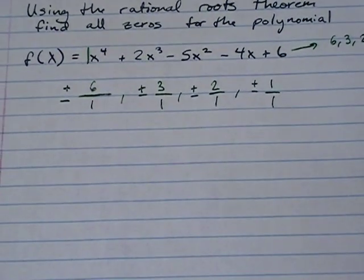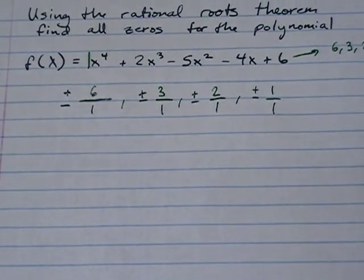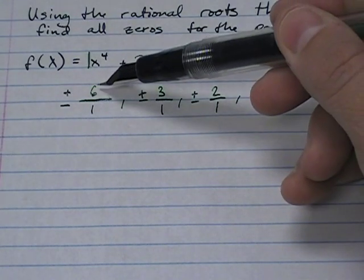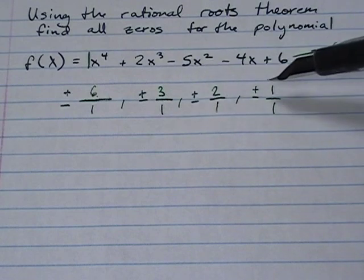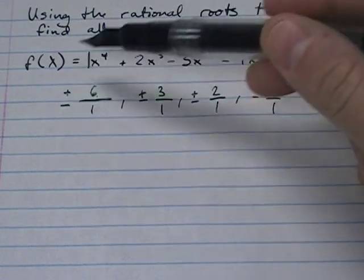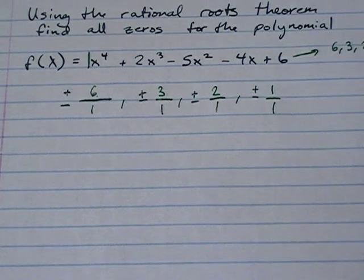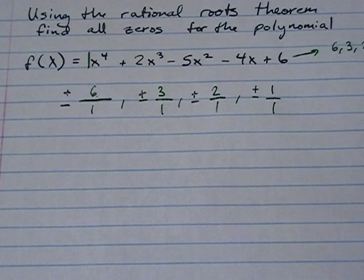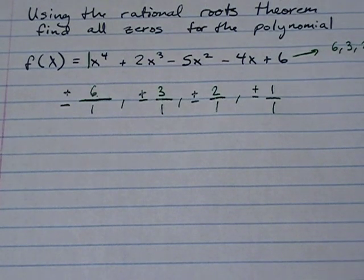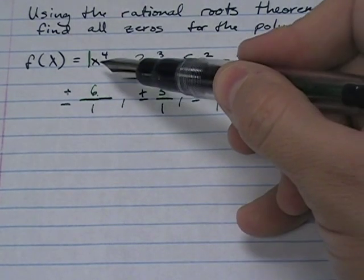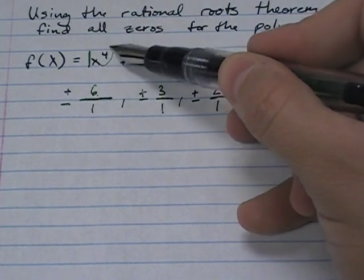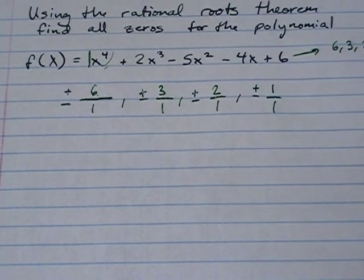To find all the rational zeros for this polynomial, we have two zeros for each value, giving us eight possible zeros in total. We have to try all eight of these possible zeros. There are a maximum of four rational roots, so we may not have to use all eight.